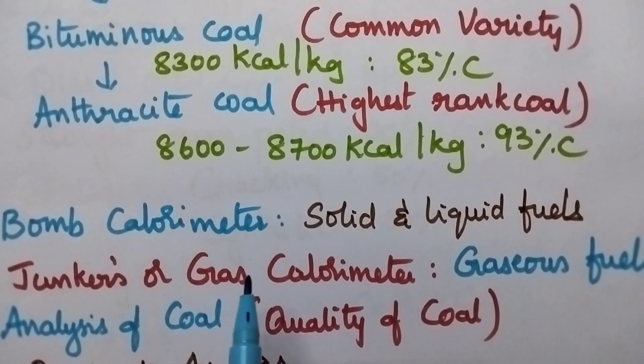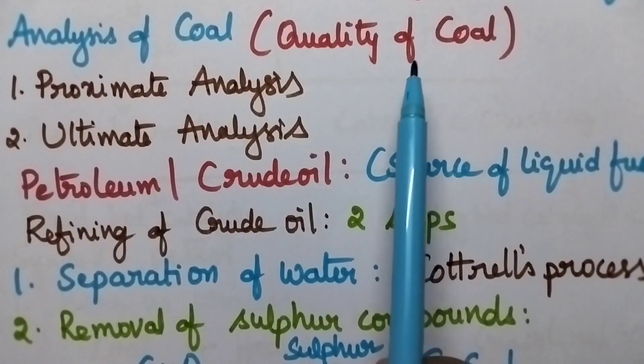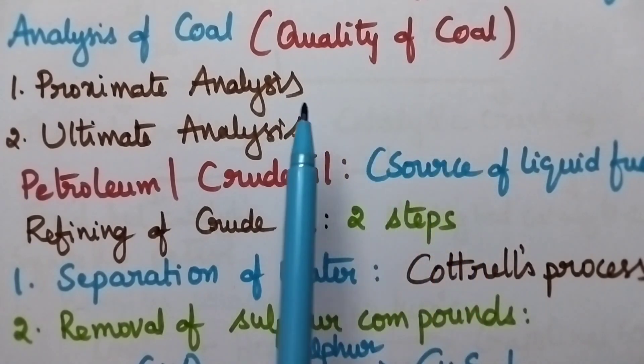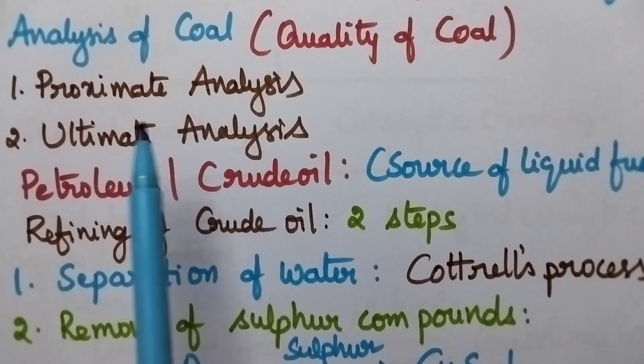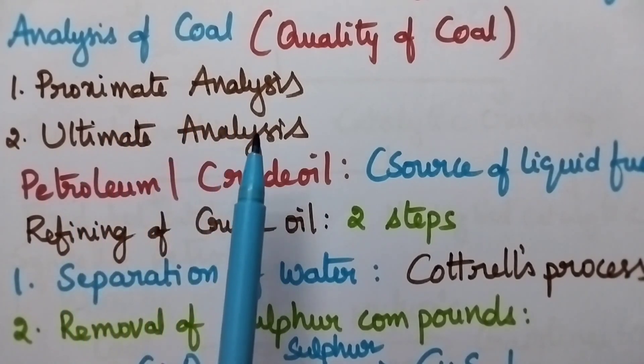Bomb calorimeter is mostly used for the determination of calorific value of solid and liquid fuels, whereas junkers or gas calorimeter can be used for the determination of calorific value of gaseous fuels. The quality of coal can be estimated through its analysis. Analysis of coal can be done either through proximate analysis or through ultimate analysis.